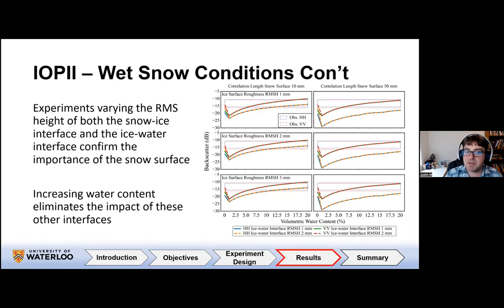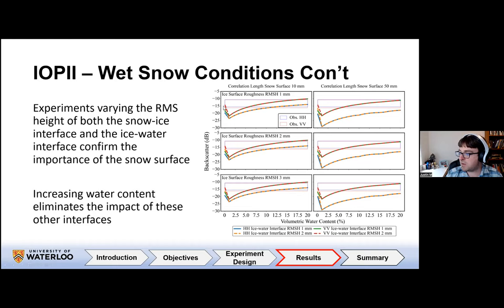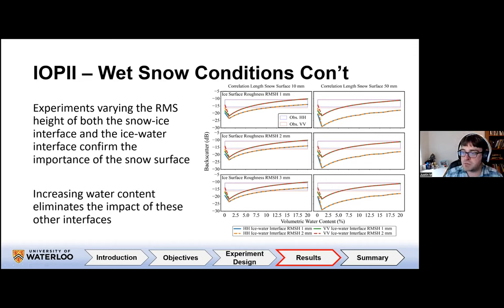We also wanted to explore whether other interfaces had a role, or if it was primarily the top of the snow. We ran three experiments where the ice surface had an RMSH of one millimeter, two millimeters, and three millimeters. When volumetric water content is zero, we see an impact as expected. But as soon as we introduce even a small amount of water into the snowpack, all observations converge and increase consistently. It is that top of the snowpack that controls the backscatter.